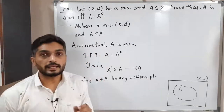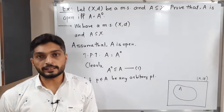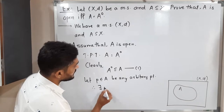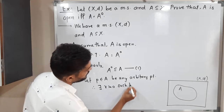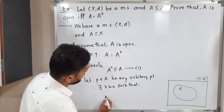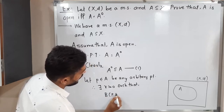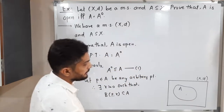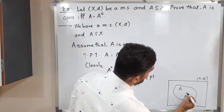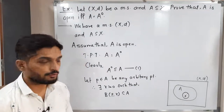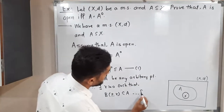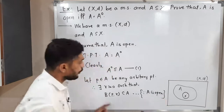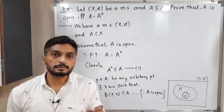We have the information that A is an open set, so we can apply the definition of an open set. The definition says there exists R greater than 0 such that B(P, R) is a subset of A. So since A is open, if you select any point P, it is possible to find a ball around P which is a subset of A.